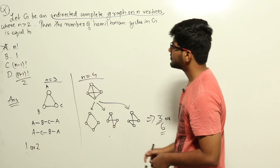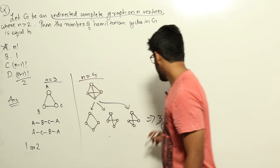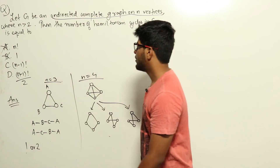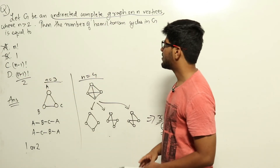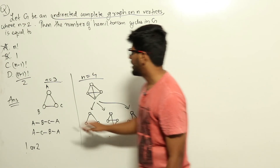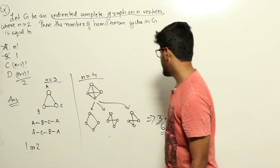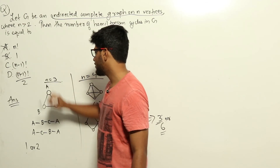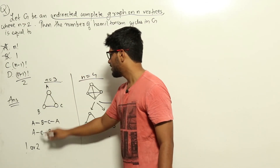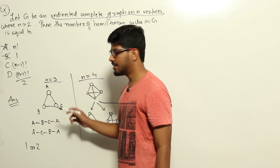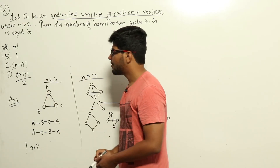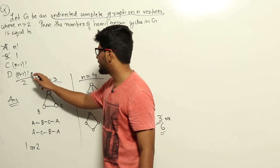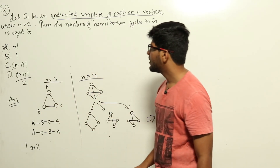For n=4, the answer should be three or six. Option B gives 1, which is wrong. Option C gives (n-1)! = 3! = 6, and option D gives (n-1)!/2 = 3. So if we consider the reverse of a cycle as a different cycle, the answer is (n-1)!. If we consider the reverse as the same cycle, the answer is (n-1)!/2.